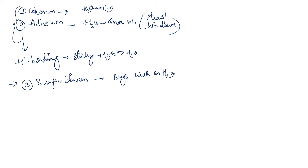We also see water droplets assuming a spherical shape, and this droplet shape occurs because it possesses less surface area relative to volume. Because of this surface tension, we also see water sticking to straws and windows.